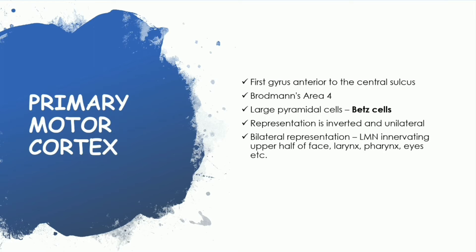The whole human body is represented in this motor cortex. The topographical representation of the whole body is given in this motor cortex and it is a unilateral, inverted representation. Many parts of our body have a bilateral representation — for example, the upper half of the face, our larynx, and our eyes have a bilateral representation.